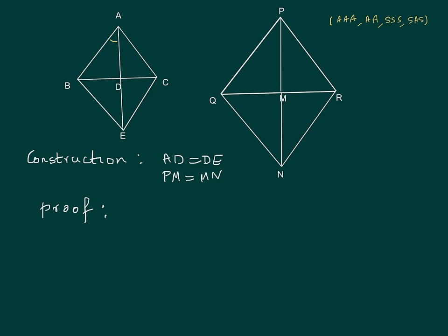Proving triangle ABE ~ triangle PQN will give us angle BAE equal to angle QPN, and then we can similarly prove angle CAE equal to angle RPN. Hence firstly we will prove that ABEC and PQNR are parallelograms.